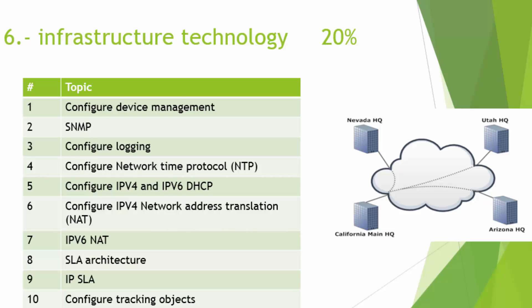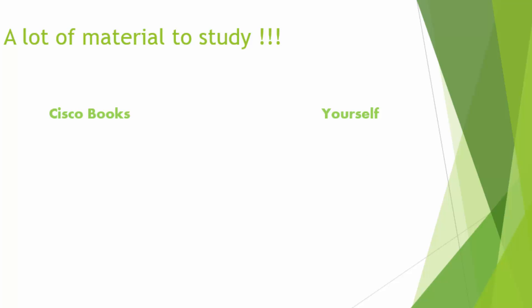We're going to talk about Infrastructure Services — how to configure device management, SNMP, logging, and the Network Time Protocol. We'll also configure IPv4 and IPv6 ACLs, DHCP (Dynamic Host Configuration Protocol), IPv4 Network Address Translation so that communication can go out from your internal private network to the internet, IPv6 NAT, IP SLA architecture, configuring tracking objects, and Cisco NetFlow.